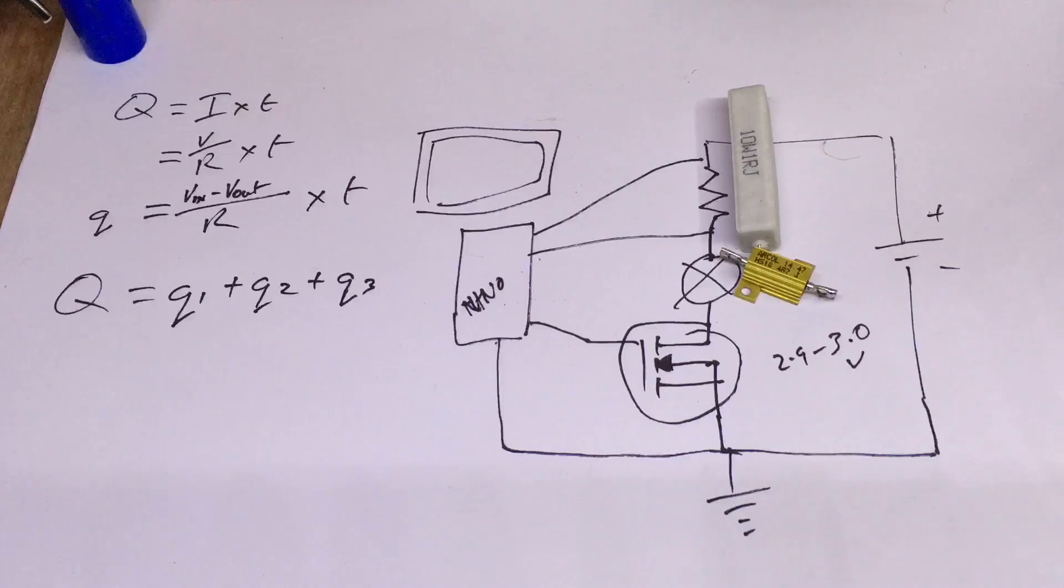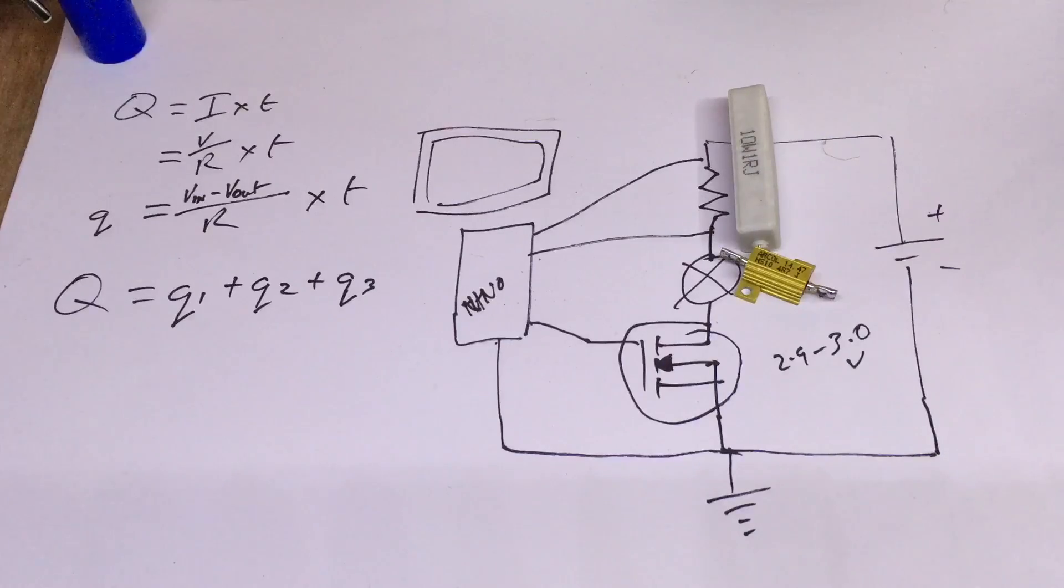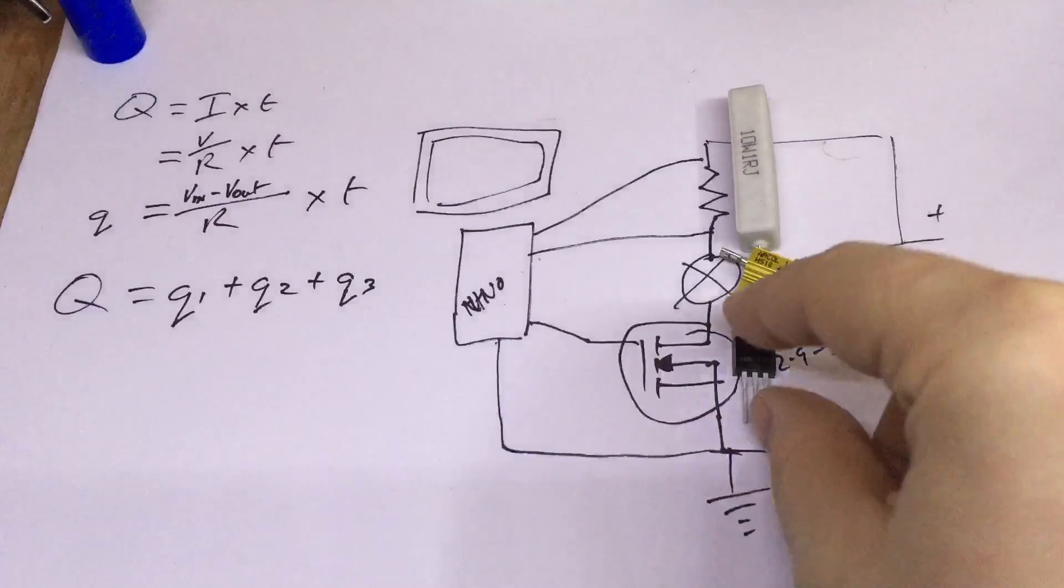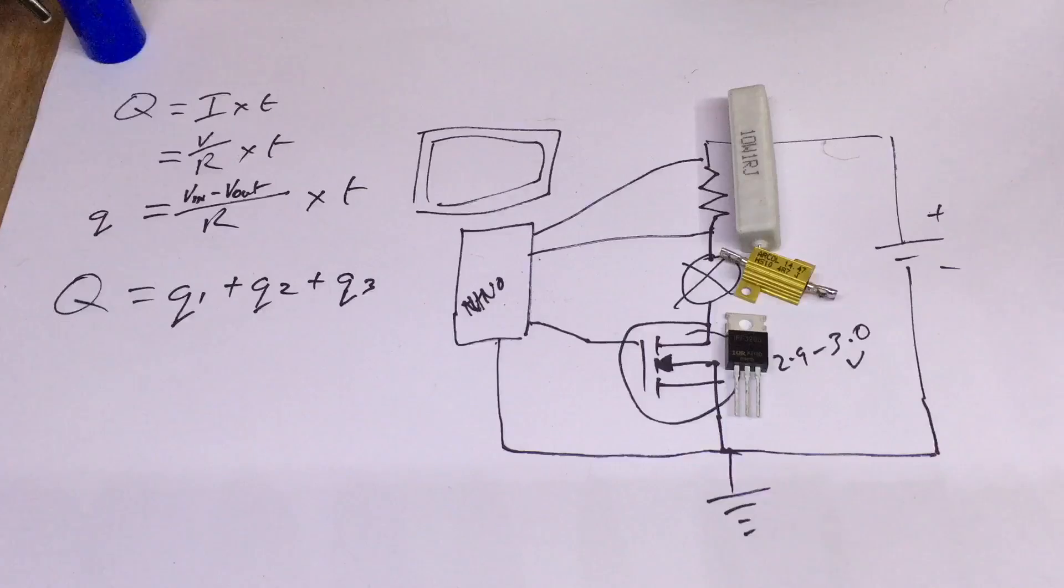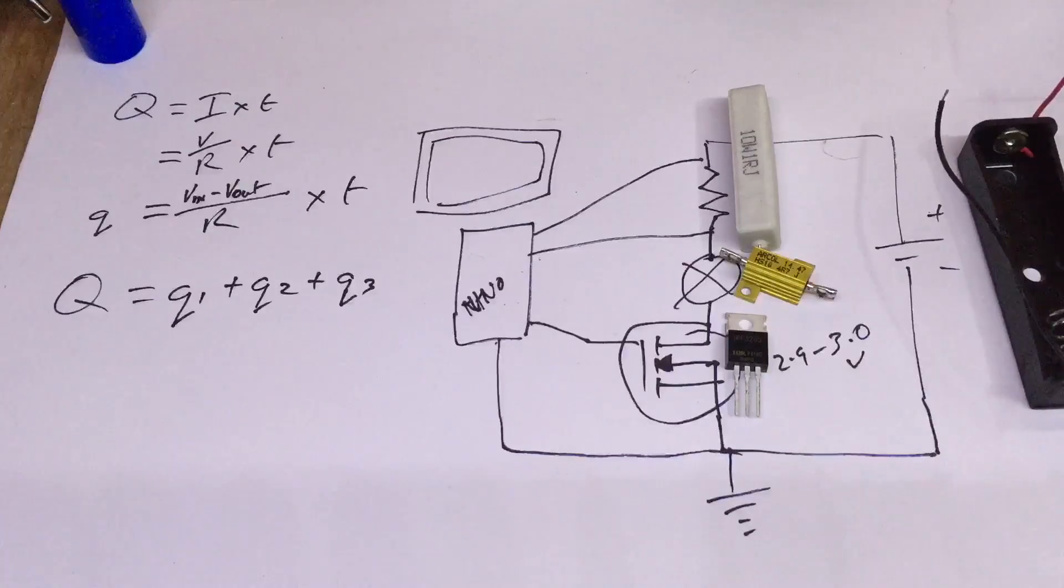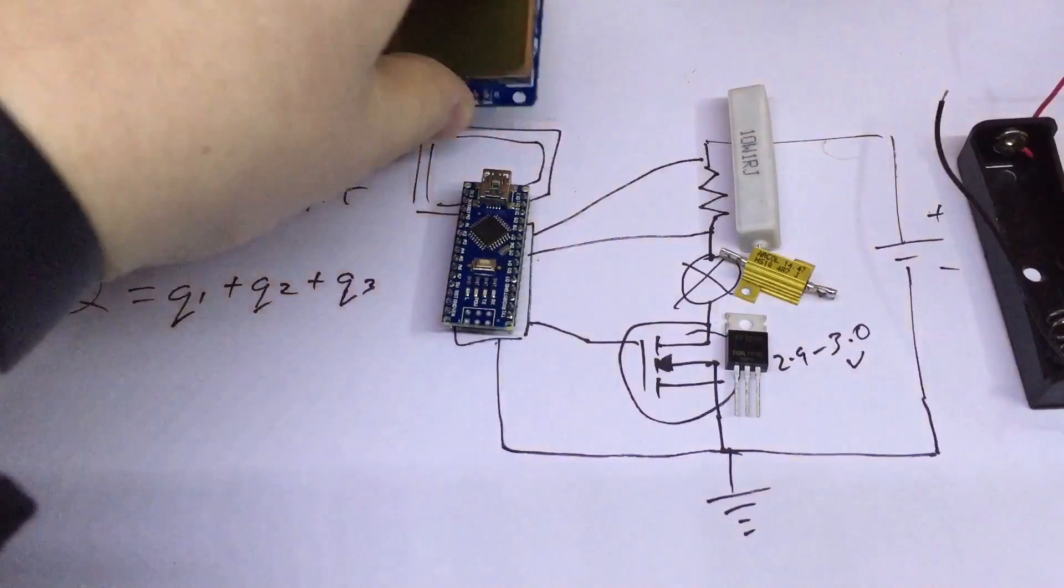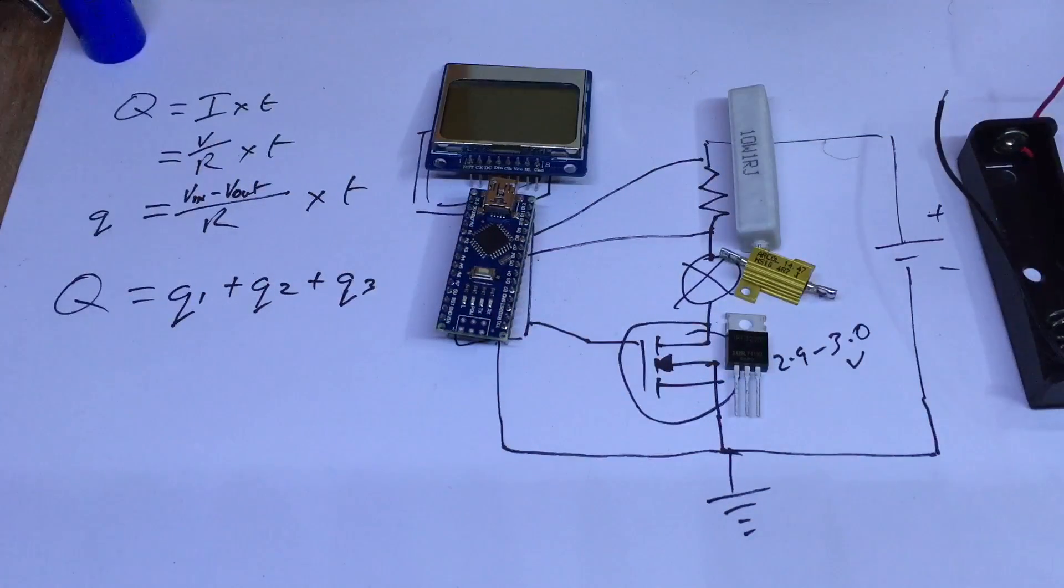My N-channel MOSFET, this is the one I've been using quite a lot, the IRF3205, and a battery holder, and an Arduino Nano, and a 5110 Nokia 8448 screen.